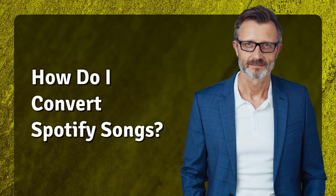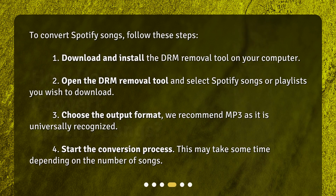How do I convert Spotify songs? To convert Spotify songs, follow these steps: 1. Download and install the DRM removal tool on your computer. 2. Open the DRM removal tool and select the Spotify songs or playlists you wish to download. 3. Choose the output format — we recommend MP3 as it is universally recognized. 4. Start the conversion process. This may take some time depending on the number of songs.